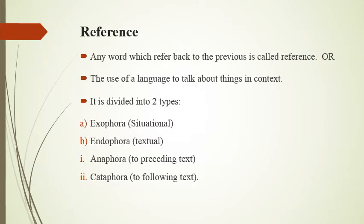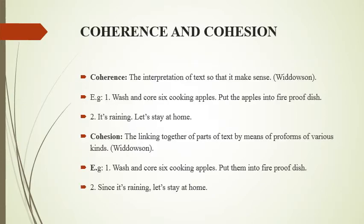Cataphora refers to any word or detail that will appear in the following text. Along with reference, there are two important terms in pragmatics: coherence and cohesion. Coherence is the interpretation of the text so that it makes sense — basically, it is a link between two sentences, ideas, or paragraphs without any linking word.